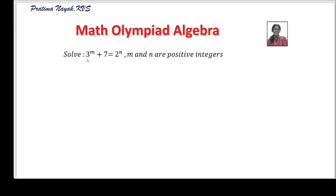The question is: solve 3 raised to the power m plus 7 is equal to 2 raised to the power n, where m and n are positive integers. You will observe it and think for some time — you can say that m is 2 and n is 4. Most of us can say it, but in Math Olympiad you have to show the process, the logic, and the reasoning.